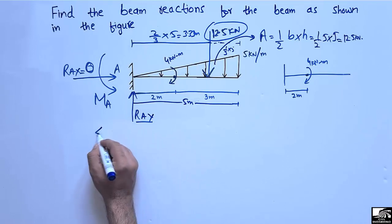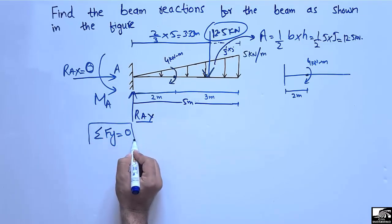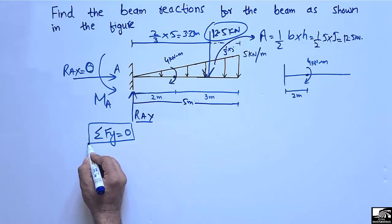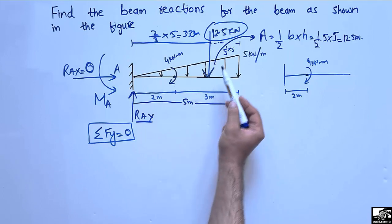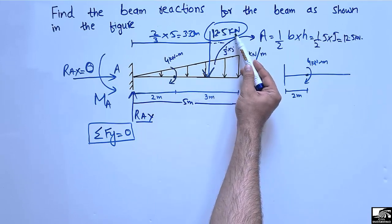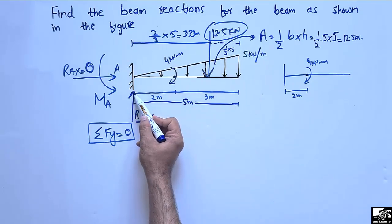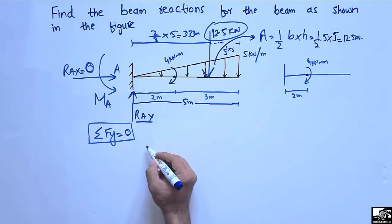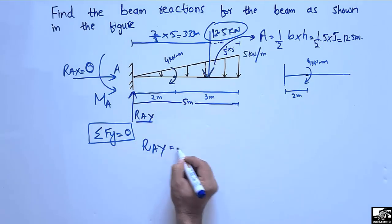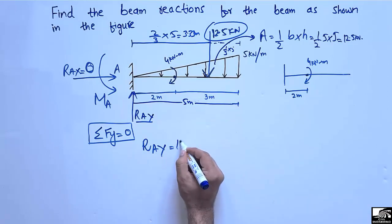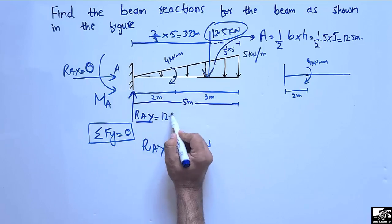To find RAy, we take the summation of vertical forces equal to zero. The total load acting on this beam is 12.5 kilonewtons, and it will be supported only by this support reaction since there is no other support. Therefore RAy is simply equal to 12.5 kilonewtons.